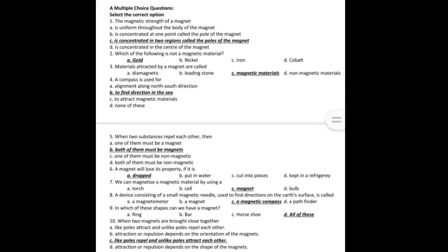A compass is used to find direction in the sea. When two substances repel each other, then both of them must be magnets. A magnet will lose its property if it is dropped. We can magnetize a magnetic material by using a magnet.